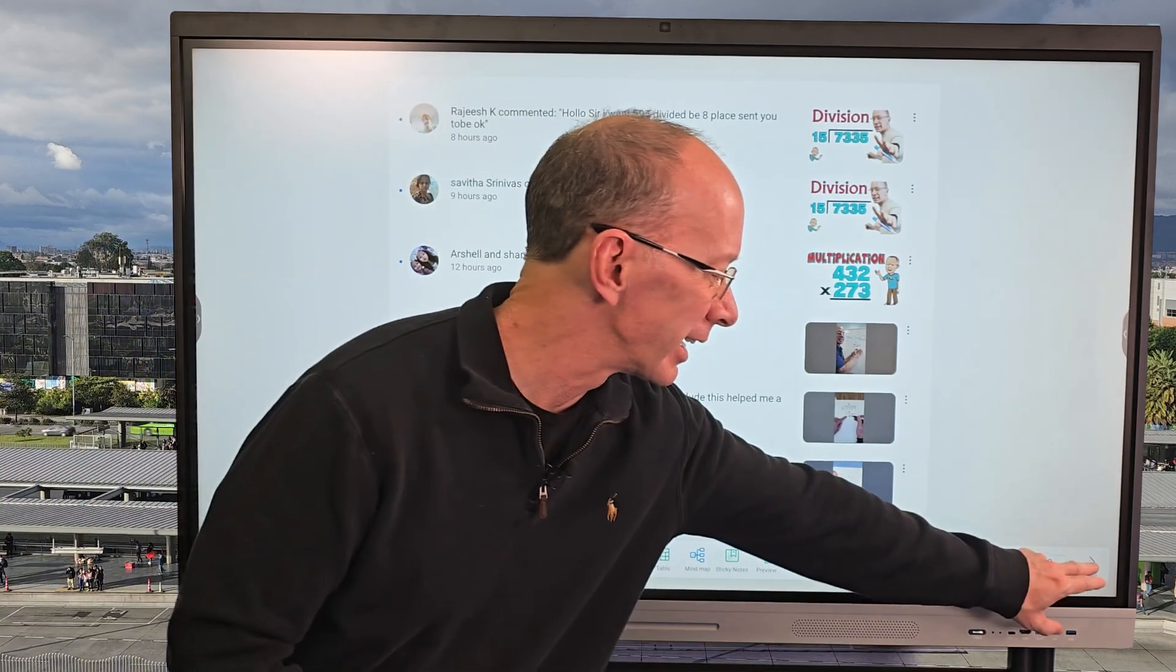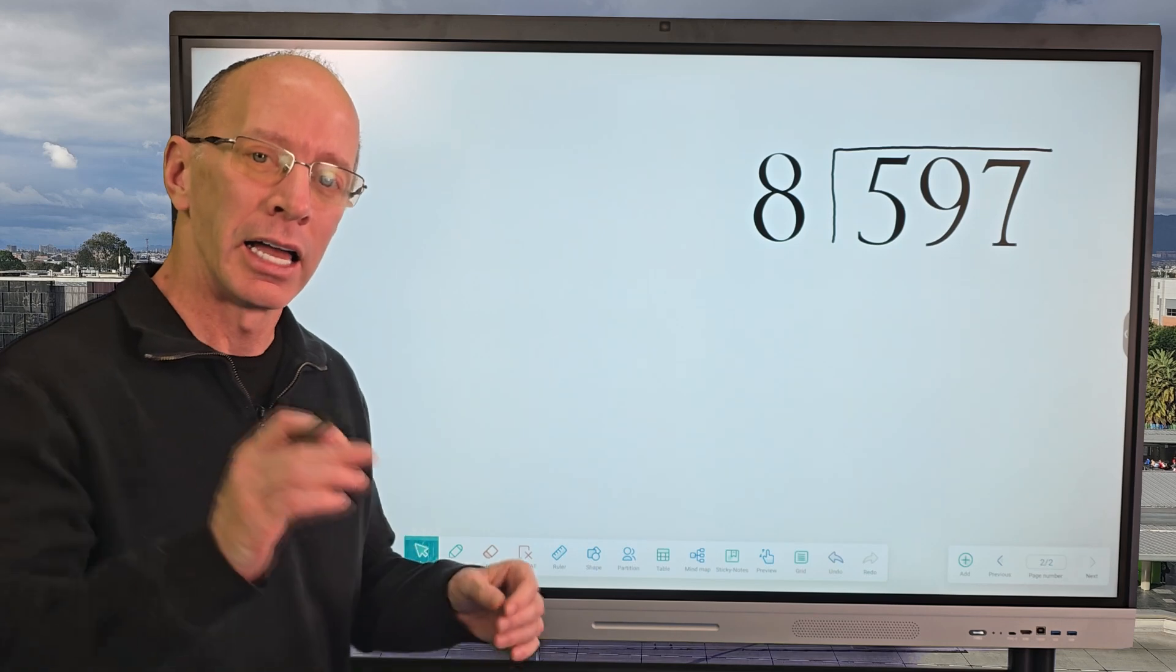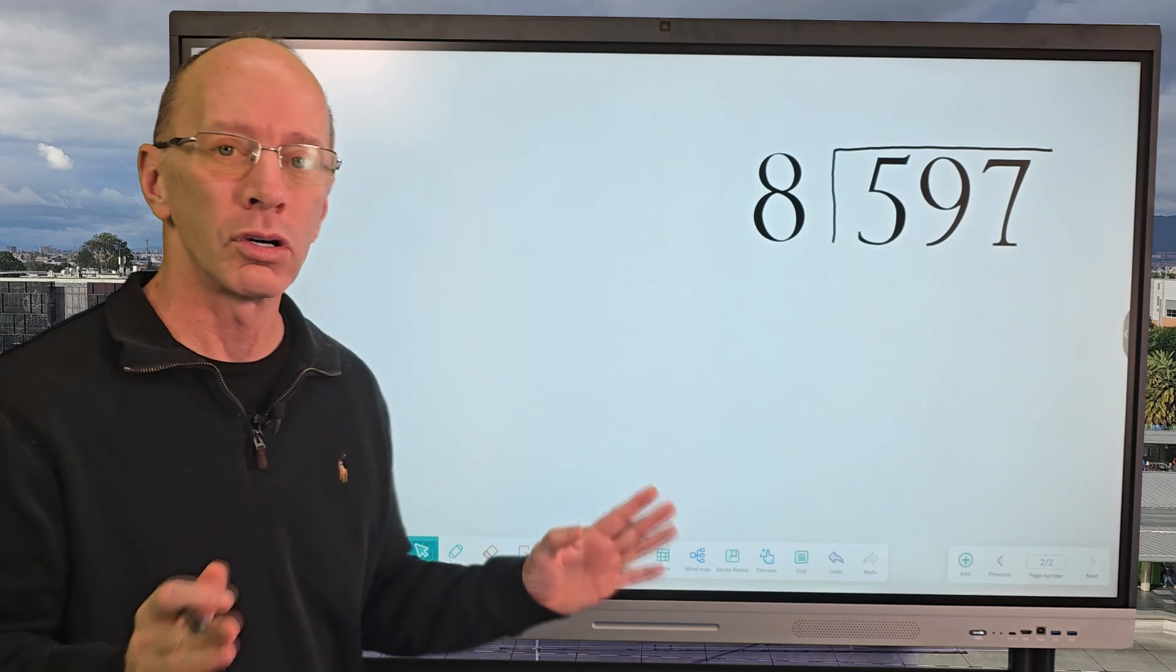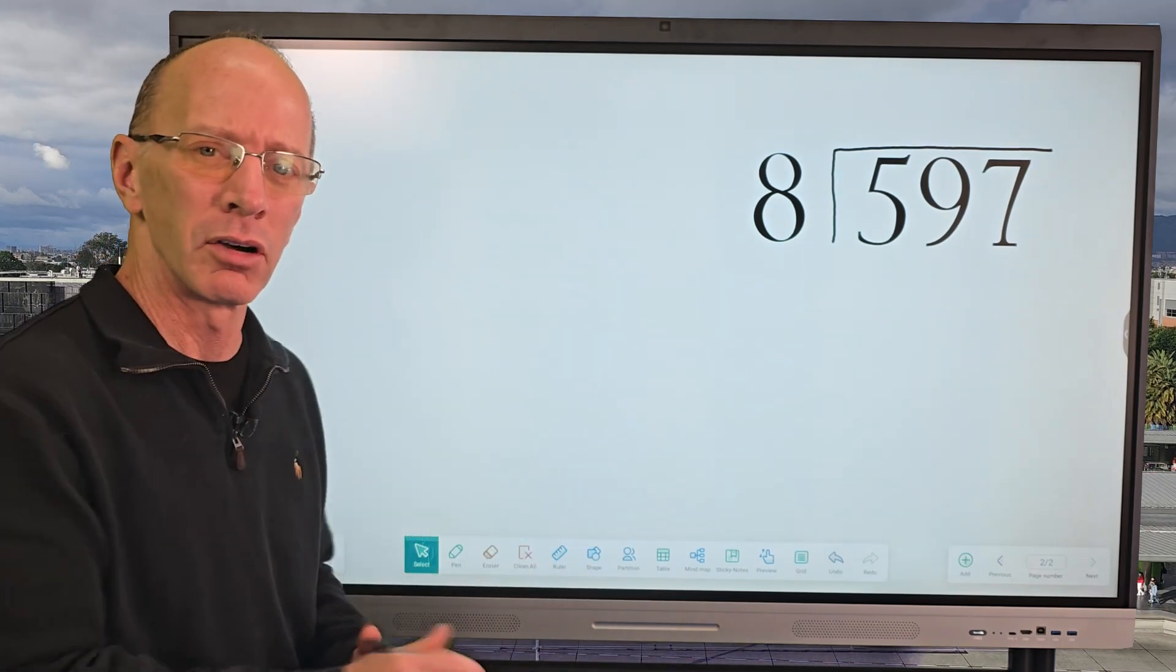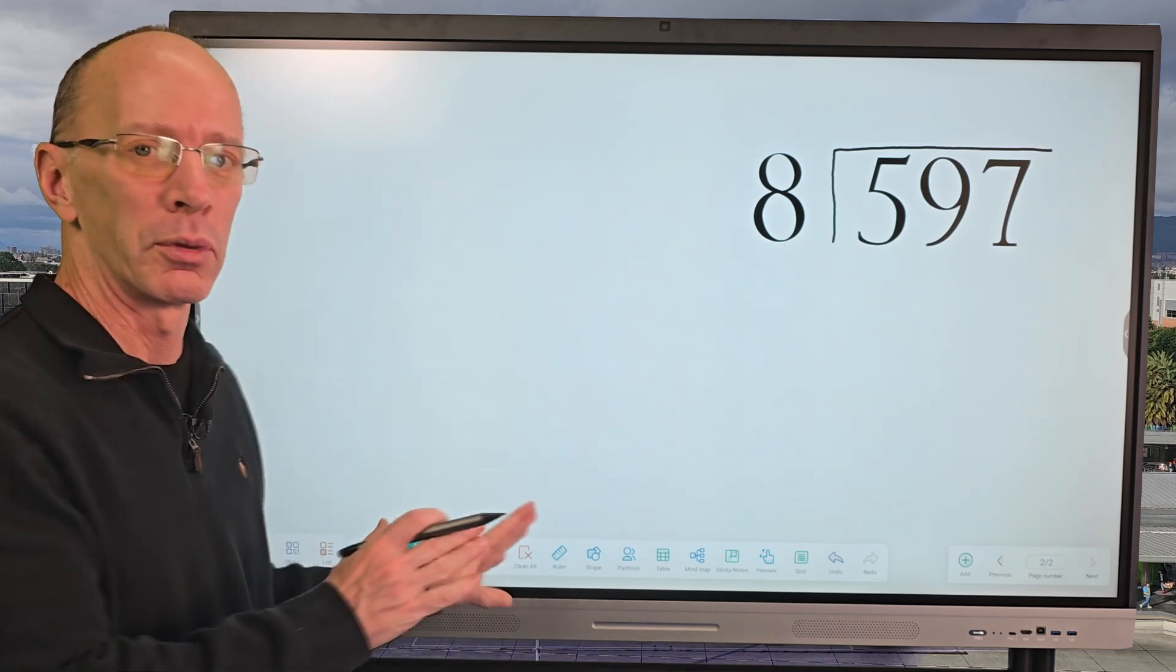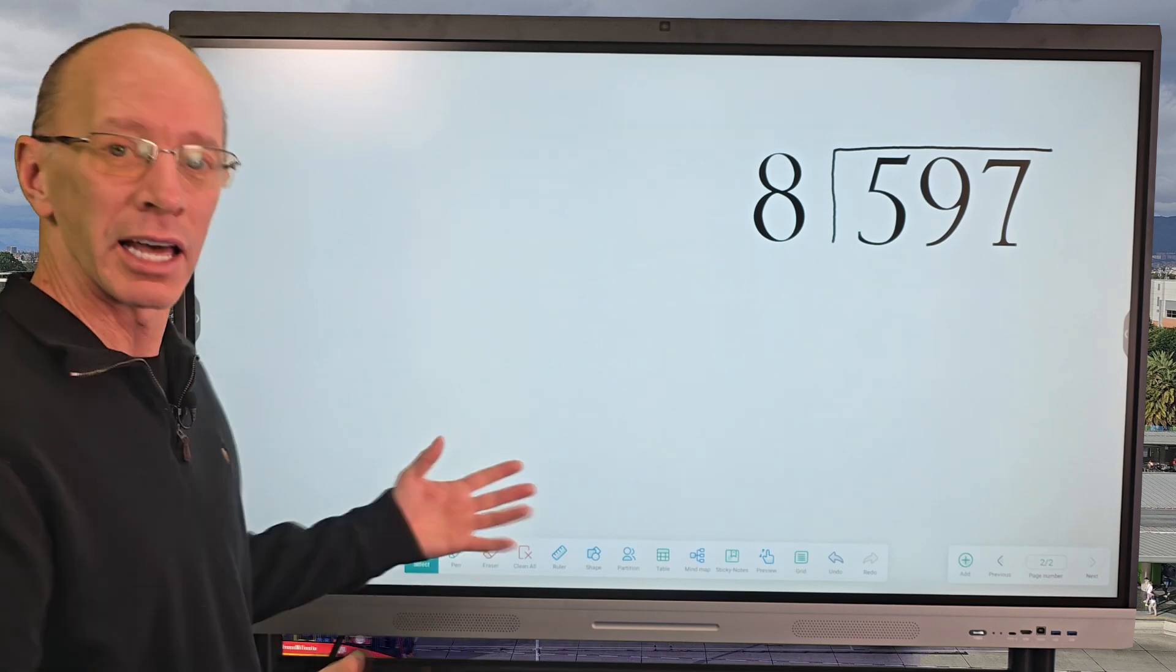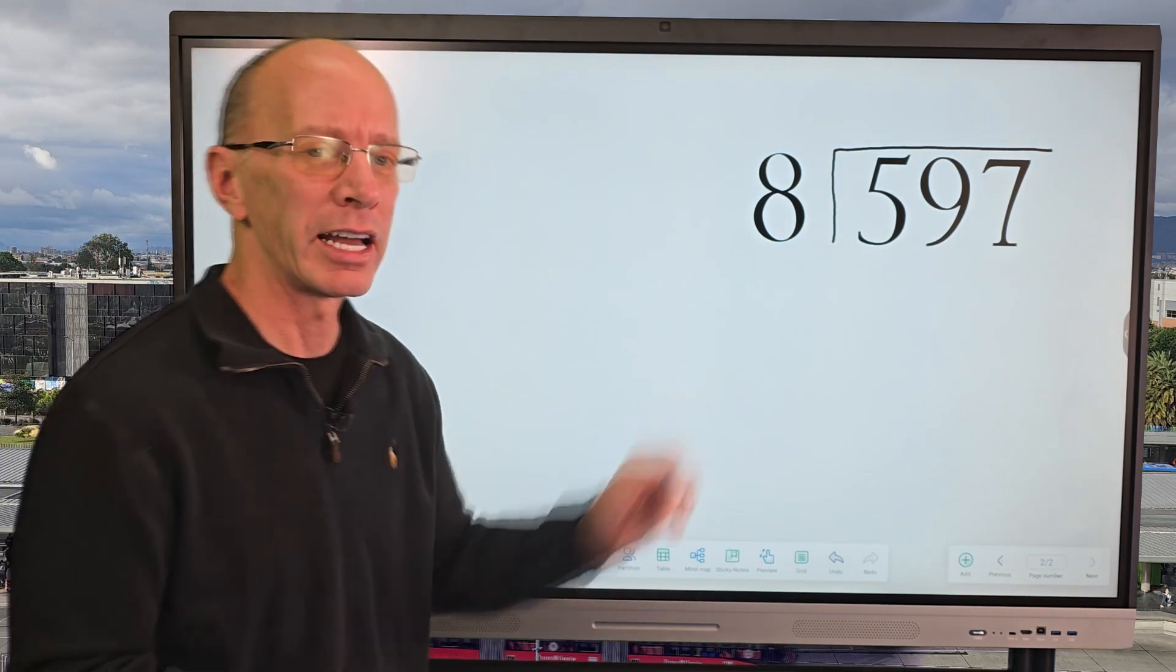All right, let's go ahead and get started. I am working on the HKMLC board, and this is a smart board. It's so cool. I love working with it, so check it out down below in the comments if you're interested in a whiteboard like this. It really helps out doing mathematics and just a lot of fun. All right, we got the problem here. 597 divided by 8.